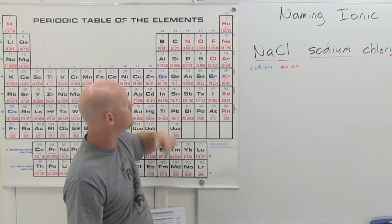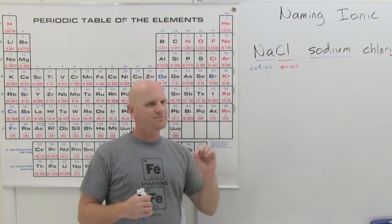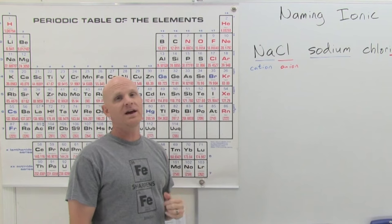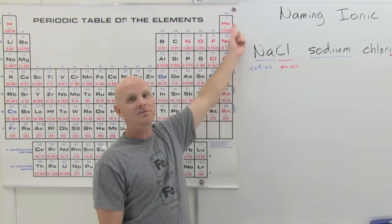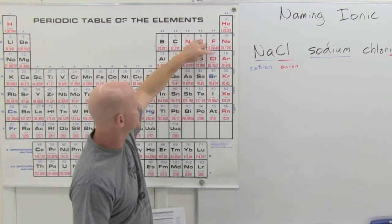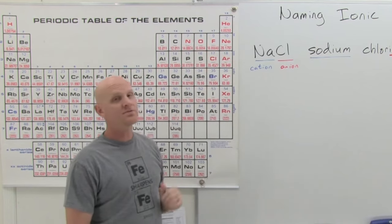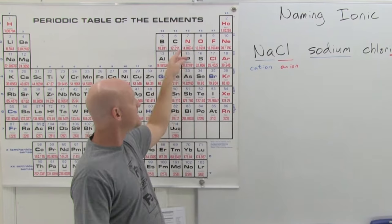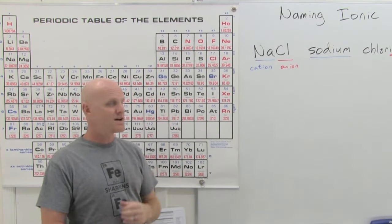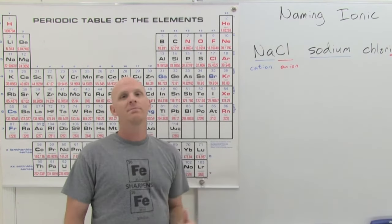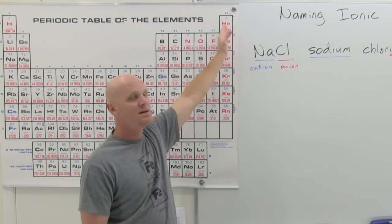For example, neon has 10 electrons and argon 18, while fluorine, chlorine, and bromine have 9, 17, and 35 electrons respectively as neutral atoms. As ions they each gain one extra electron and have a negative one charge. Non-metals tend to gain electrons as monatomic ions: fluorine, chlorine, bromine, and iodine become minus one; oxygen, sulfur, and selenium become minus two; and nitrogen and phosphorus become minus three. In this lesson we'll only encounter these elements as ions within ionic compounds.